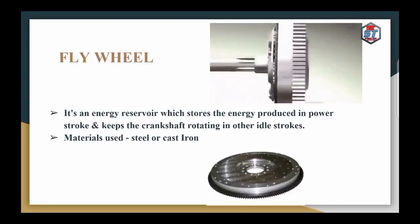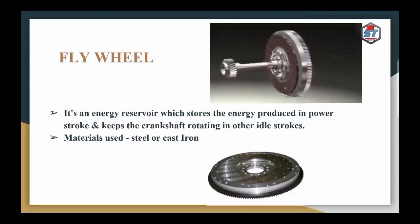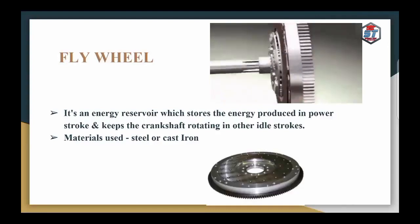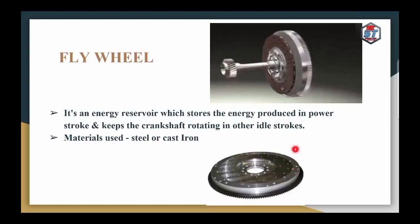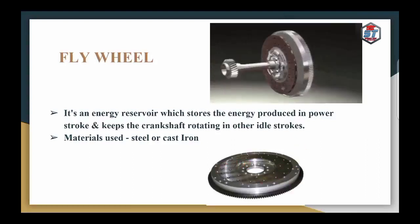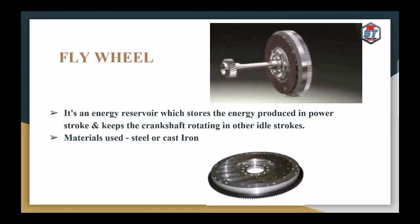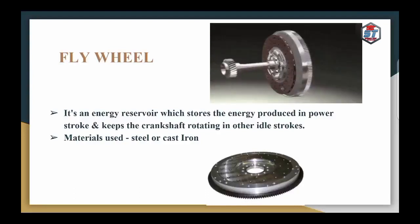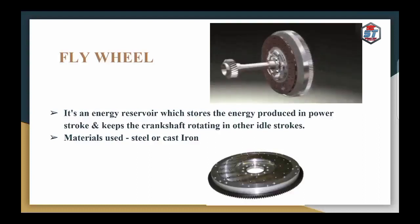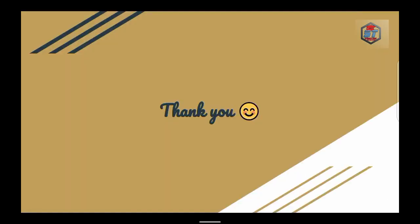The metal used for the construction of the flywheel is cast iron or steel. On the circumference of the flywheel, there are gear teeth forming a ring gear. This ring gear is used for the starting purpose — when the engine starts, the starter motor engages with these teeth. These are the components of an IC engine. Thank you all.